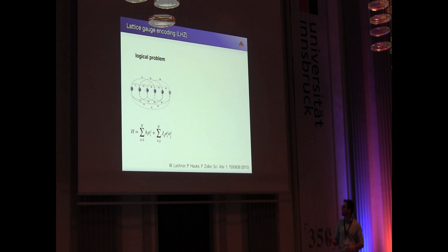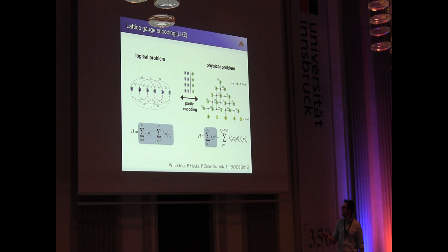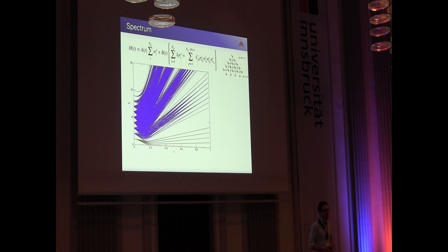The lattice gauge encoding we have in mind is the so-called LHZ encoding which works like this. You take the original logical problem which is an all-to-all connected Ising spin glass and then you take a parity encoding which maps this problem into a physical problem where the former two-party interactions are mapped to local fields on physical qubits. However, you increase the Hilbert space by doing this mapping from 2 to the power of n to 2 to the power of n squared. So you get in the physical problem unphysical states which have no correspondence in the logical problem. So you have to energetically penalize these unphysical states and this can be done with these local four-party terms. The nice thing about this architecture is that it only comprises local interactions which makes it kind of interesting for implementation in actual hardware.